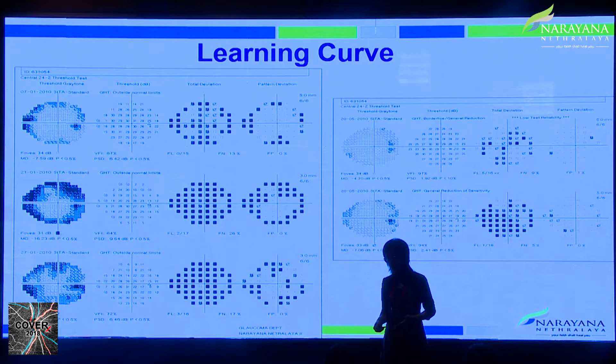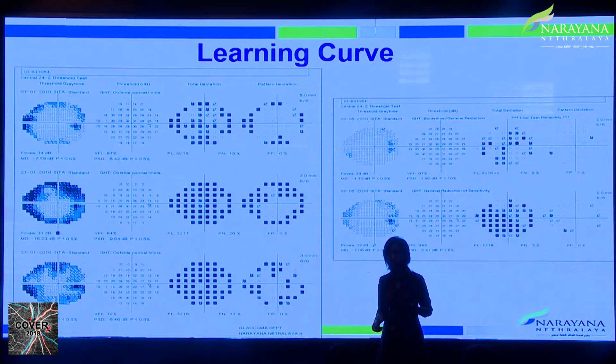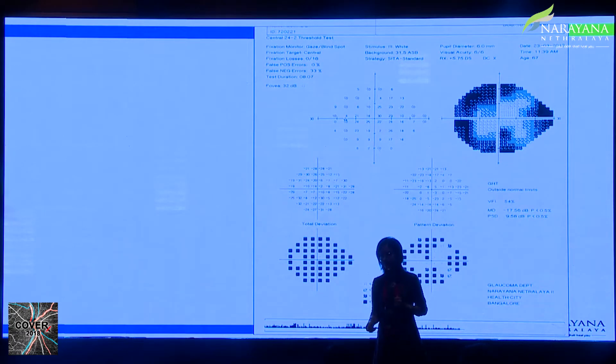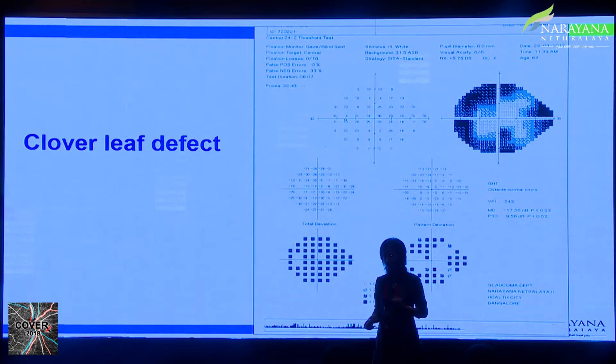Another example of an unreliable field: a ring scotoma caused by a high plus-power lens — this is called a rim artifact. Although everything looks normal clinically with a normal disc, you repeat the test and the patient can do better. This is related to the learning curve, which may not always be straightforward. Some patients take a long time to reach baseline — one patient, though well-educated and English-speaking, took almost eight months. It is not about the patient's intelligence; some people simply find it difficult to perform perimetry.